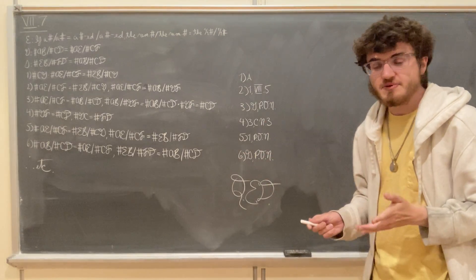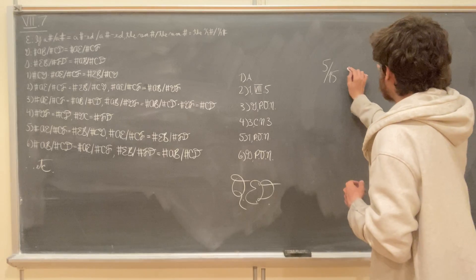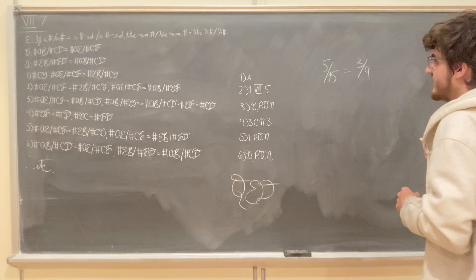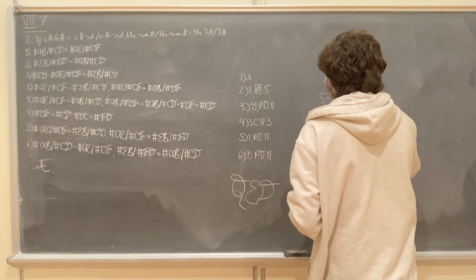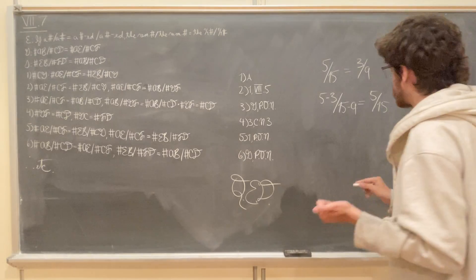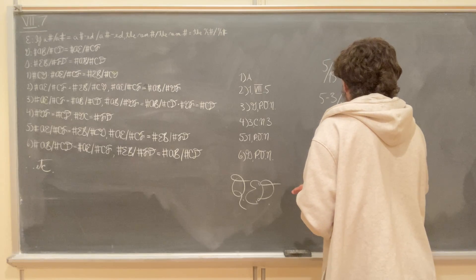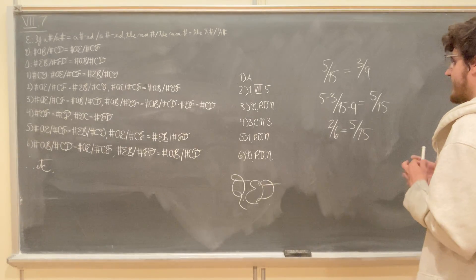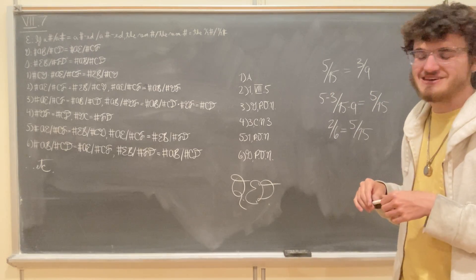An example of this would be saying that five is the same part of 15 that three is of nine, namely one-third. So five minus three will be the same part of 15 minus nine that five is of 15. Five minus three is two, 15 minus nine is six, so two is the same part of six that five is of 15. This is obviously true — two and five are both one-third of six and 15 respectively. So we see that this proposition checks out with a particular example.